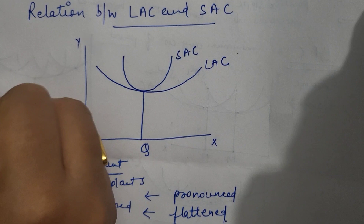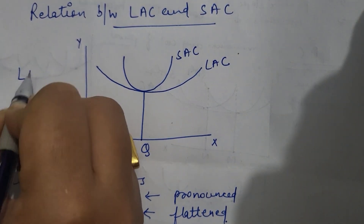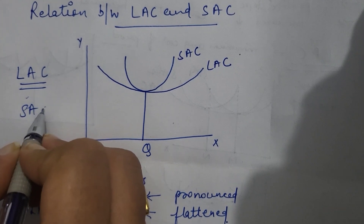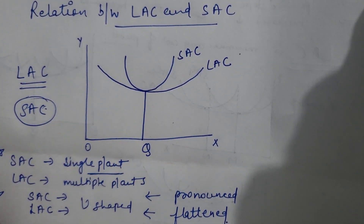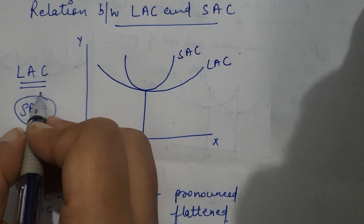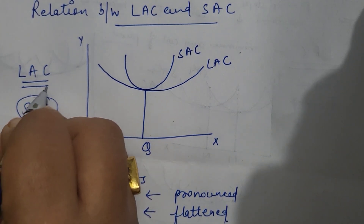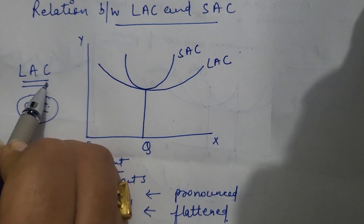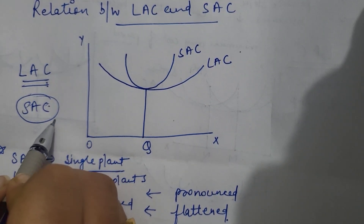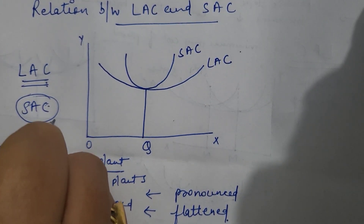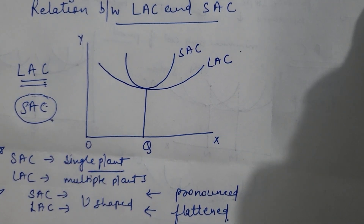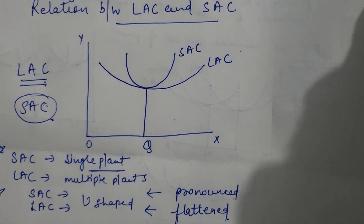The long run average cost curve never intersects the short run average cost curve. But it touches the short run average cost curve at its minimum point — tangentially — which means the long run average cost curve can never be greater than the short run average cost curve. So this is the relation between the long run average cost curve and short run average cost curves.